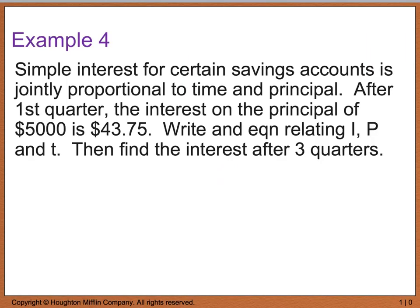So our last example deals with joint variation. And it says, simple interest for certain savings accounts is jointly proportional to time and principle. After the first quarter, the interest on the principle of $5,000 is $43.75. We want to write an equation that relates I, P, and T, and then find the interest after three quarters. So first of all, we were told that interest was jointly proportional to. So I equals k times the P for principle and T for time. So now that I have my equation, I'm going to go ahead and solve for k.